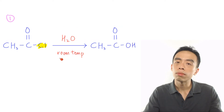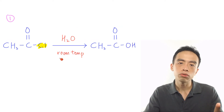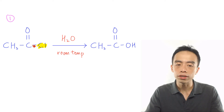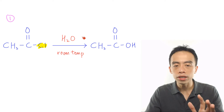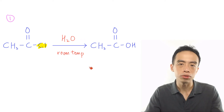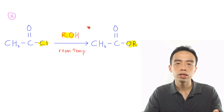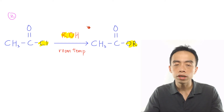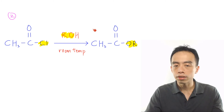Now let's talk about the four reactions of acid chlorides. The first masnone reaction would be the hydrolysis of acid chloride to give us carboxylic acid. This is done simply using water at room temperature. The second masnone reaction of acid chloride would be the condensation reaction or esterification of acid chloride to form esters. This is done using alcohol at room temperature.